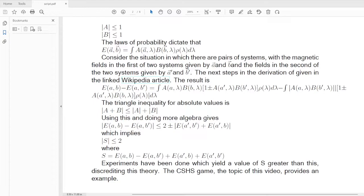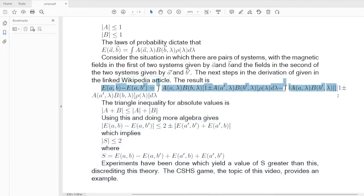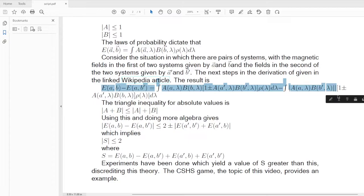The Wikipedia article is entitled, The CHSH Inequality. So here is a formula for the difference in the two expectation values. It looks kind of complicated, but it is actually not too bad if you pick it apart.